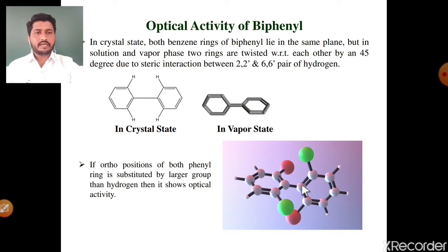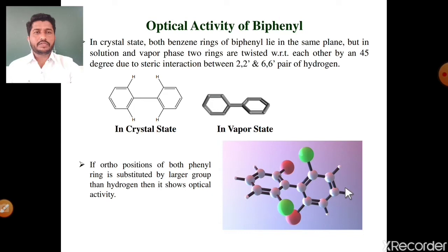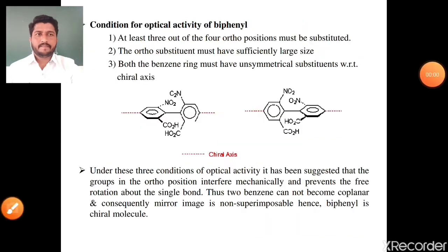For a simple example — if there is a heavy substituent, then these two rings are exactly perpendicular to each other, meaning there is a chiral axis. Due to the presence of this chiral axis, the biphenyl molecule shows optical activity.